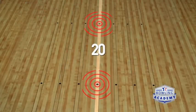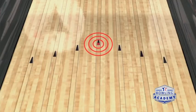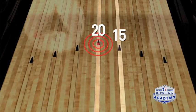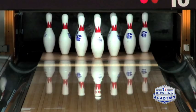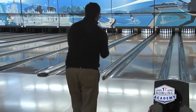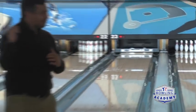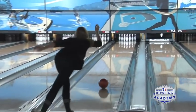The center dot on the approach is board 20. Counting five boards right gives you 15, five more gives you 10, and five more gives you the five board — and those correspond to the arrows on the lane. The head pin is also on board 20. Similar to breaking an eight-ball rack in pool, you don't want to go straight at it; you want a slight angle. If you're right-handed, start around boards 15 or 10 to create that angle toward the head pin.